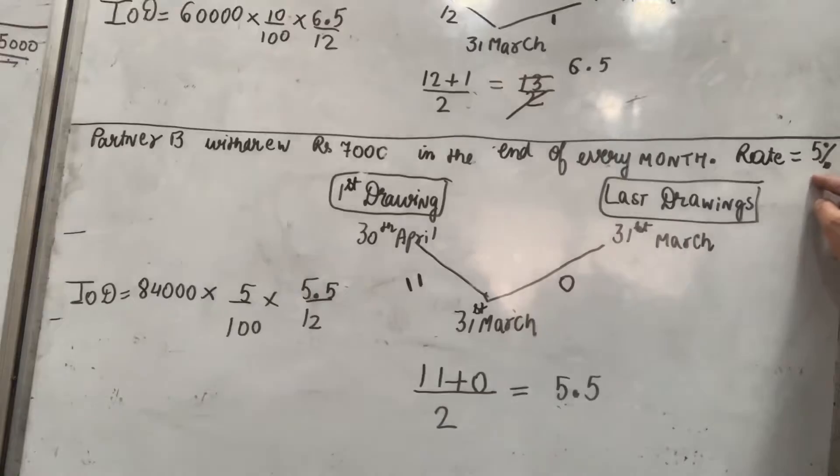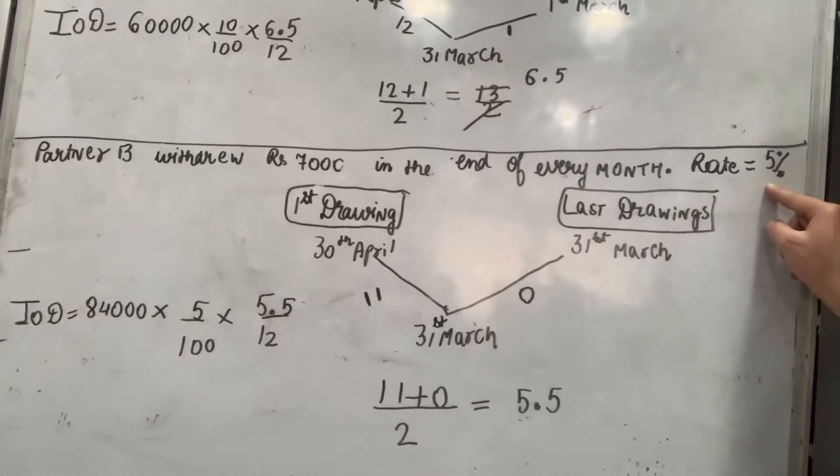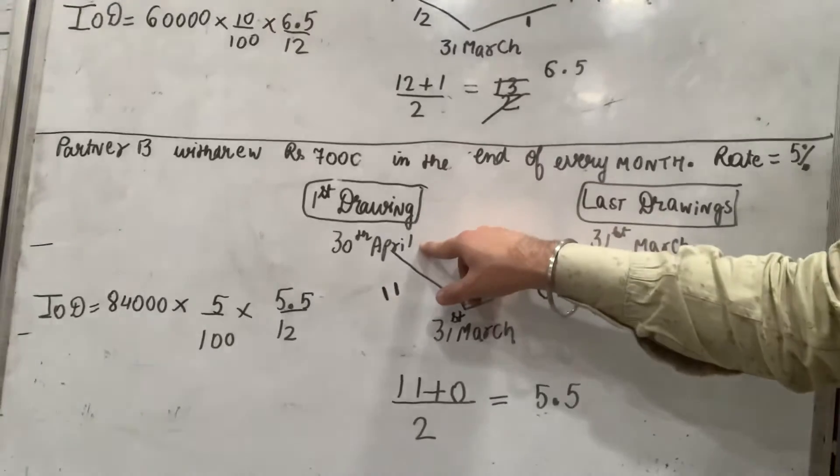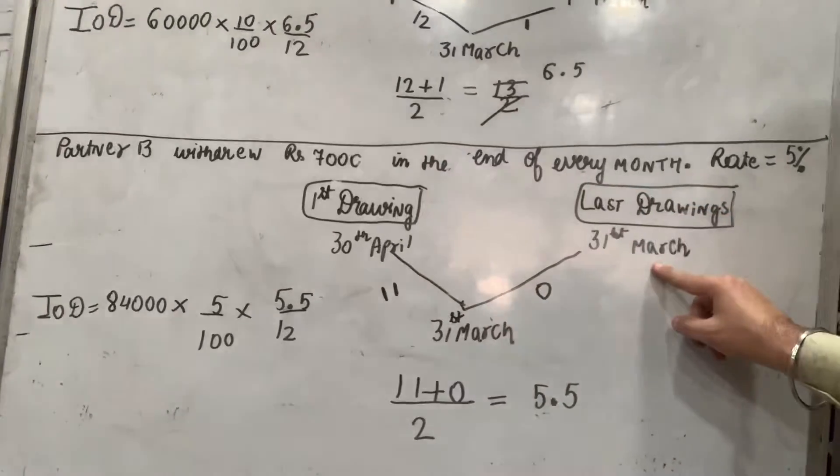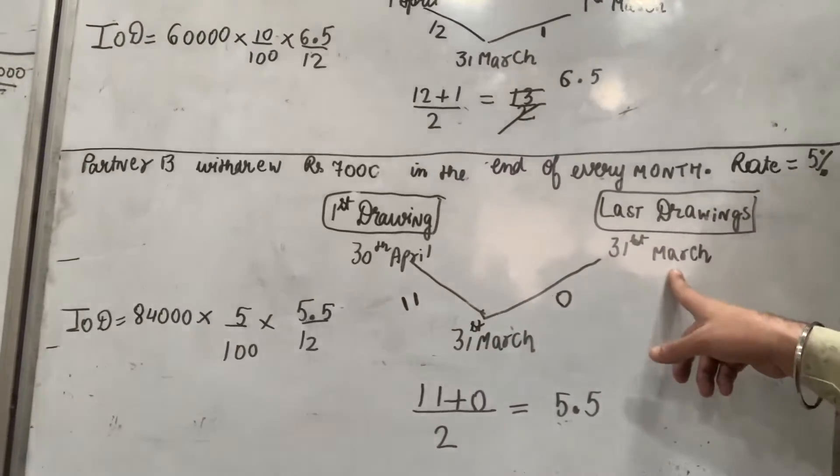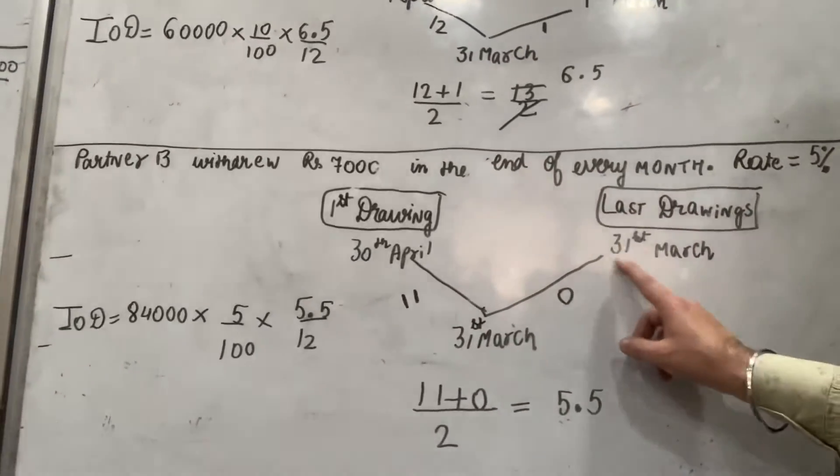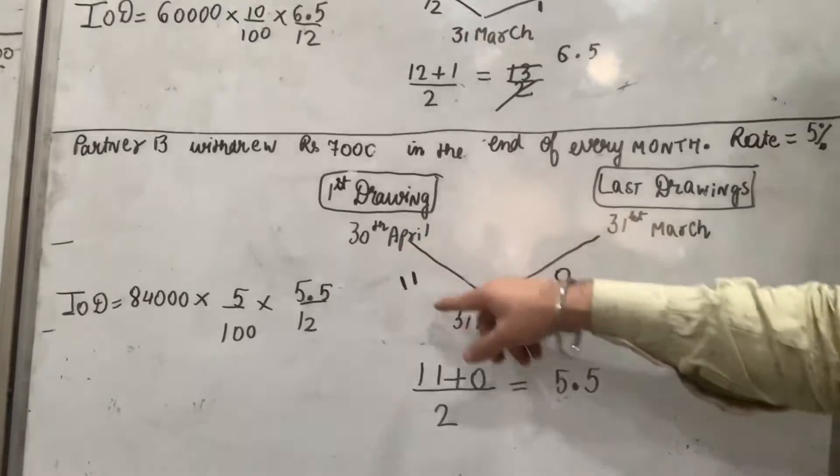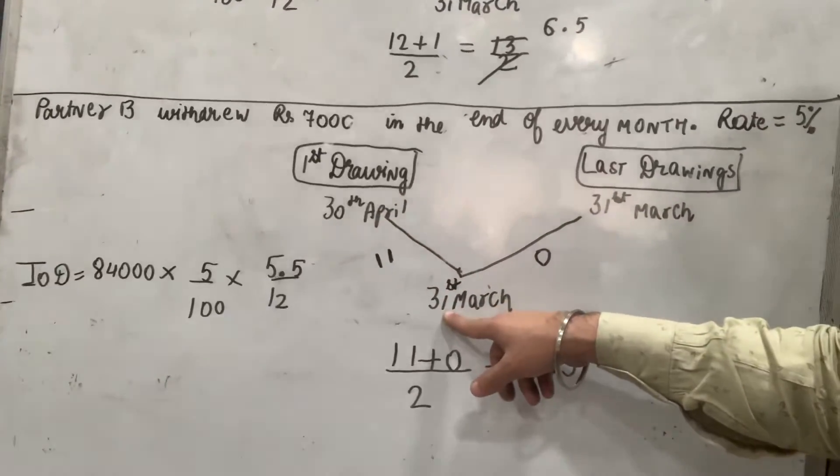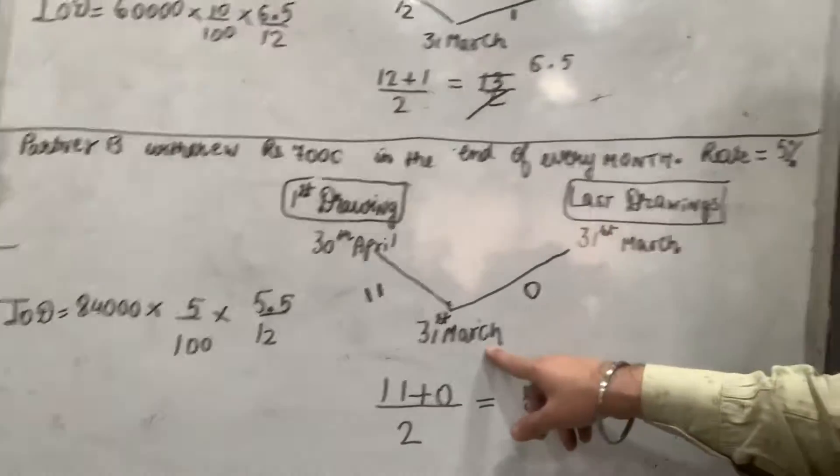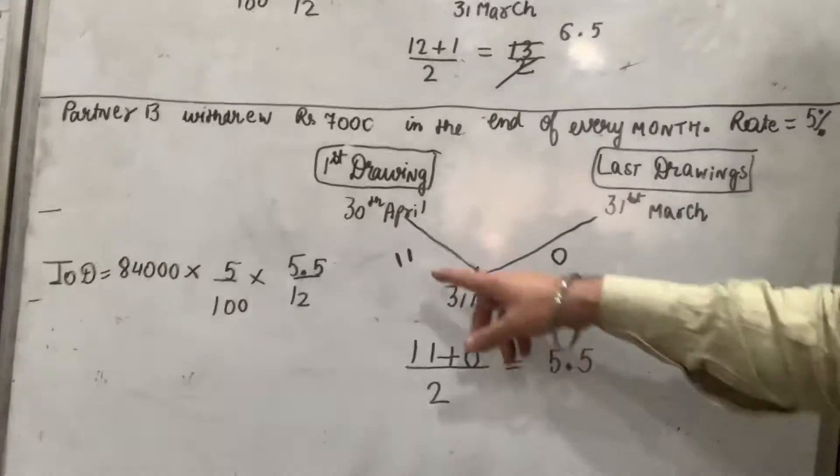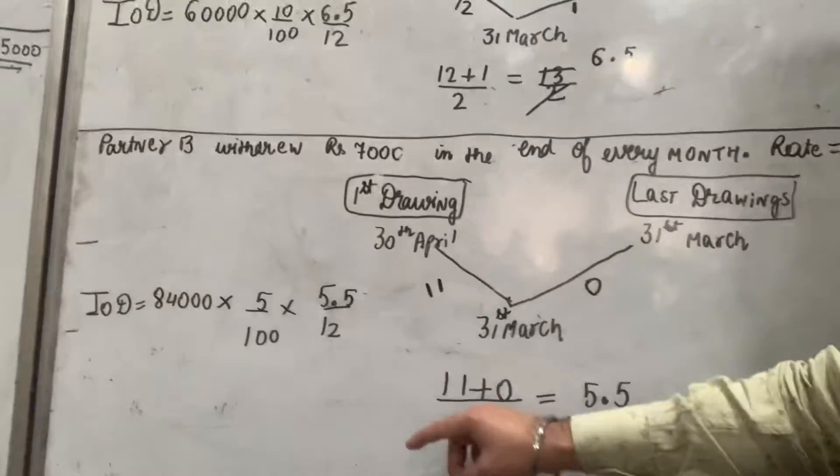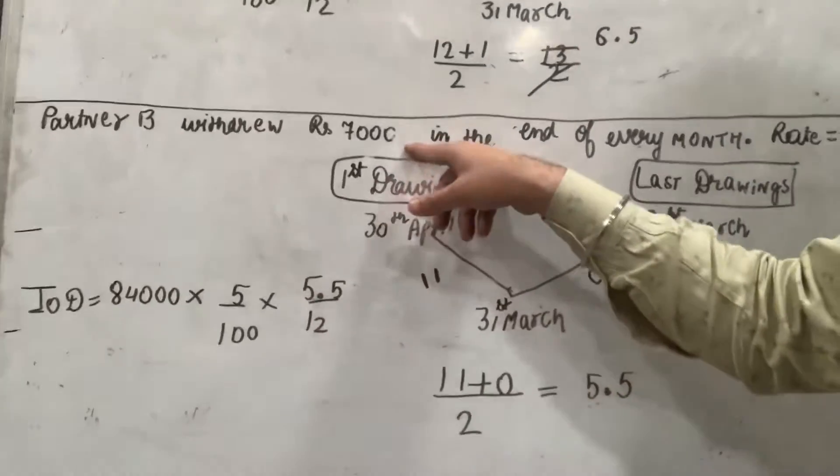Partner B withdrew Rs. 7000 in the end of every month. First drawing kab hogi? 30th April ko. Last drawing kab hogi? 30th March ko. 30th April se leke 30th March tak kitne months? 11 months. 30th March se 30th March tak? 0 months. In dono ki average nikali: 11 plus 0 upon 2, that is 5.5.